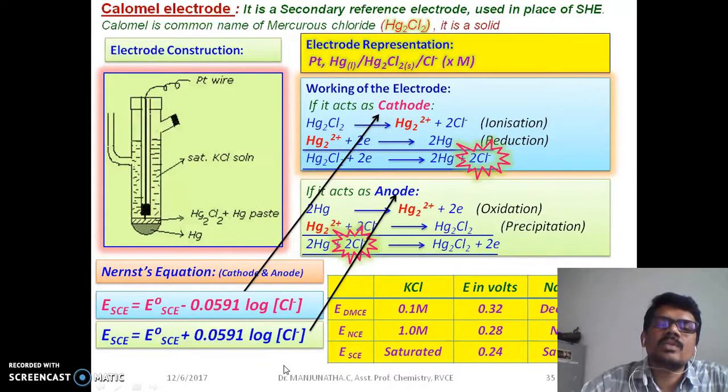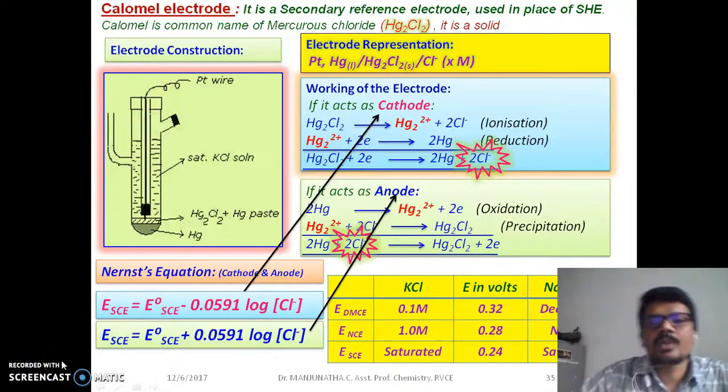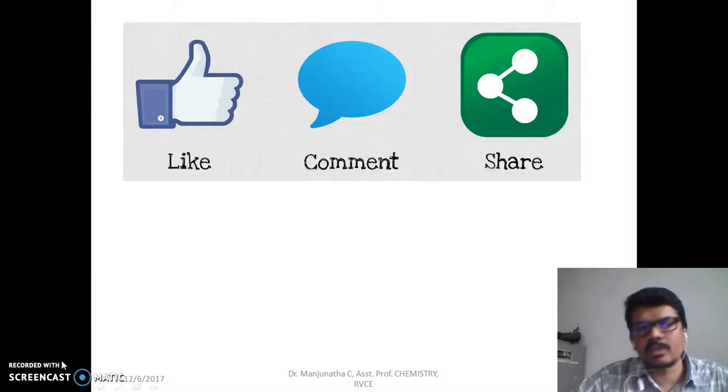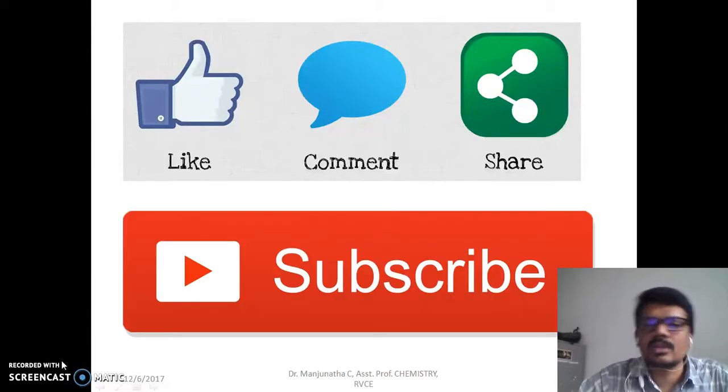This is how the calomel electrode works when it behaves as anode and cathode. The common ion here is Cl-. This is about calomel electrode. Hope you have understood about calomel electrode. If you like this video, please like it. If you have any issues, comment it. Please share it to your friends and please subscribe. Thank you very much.